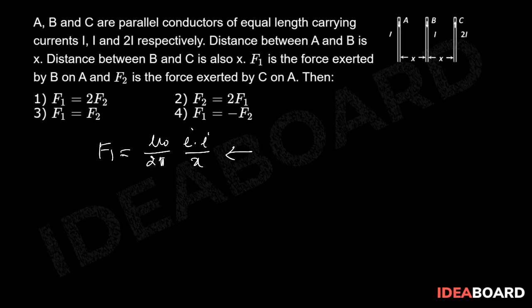Similarly, F2 is the force exerted by C on A. F2 equals mu naught by 2 pi i into 2i by 2x which is equal to mu naught i into i by 2 pi x. Now currents are in opposite direction. The force between them is repulsion.